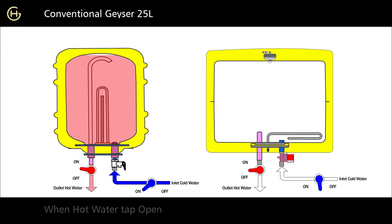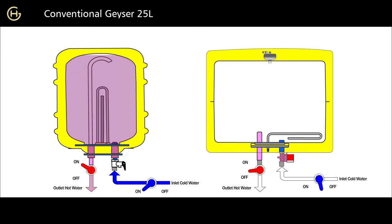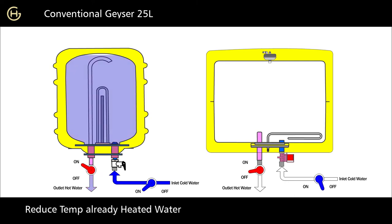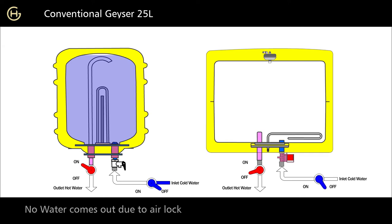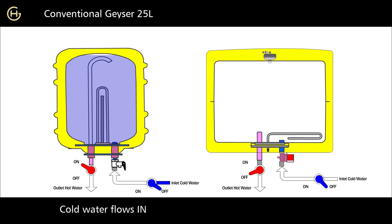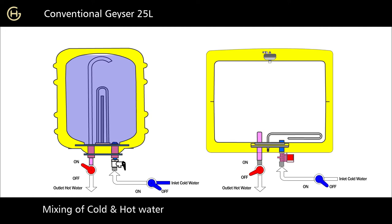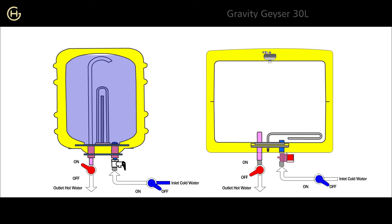When the hot water tap opens, cold water flows in and pushes out the hot water. In this process, cold water mixes with hot water and reduces the temperature of already heated water, which cannot be avoided. If the inlet cold water tap is closed and the outlet hot water tap is open, no water comes out due to air lock. So in the displacement principle, hot water comes out only when cold water flows in, and there is always mixing of cold and hot water, resulting in a loss of energy.